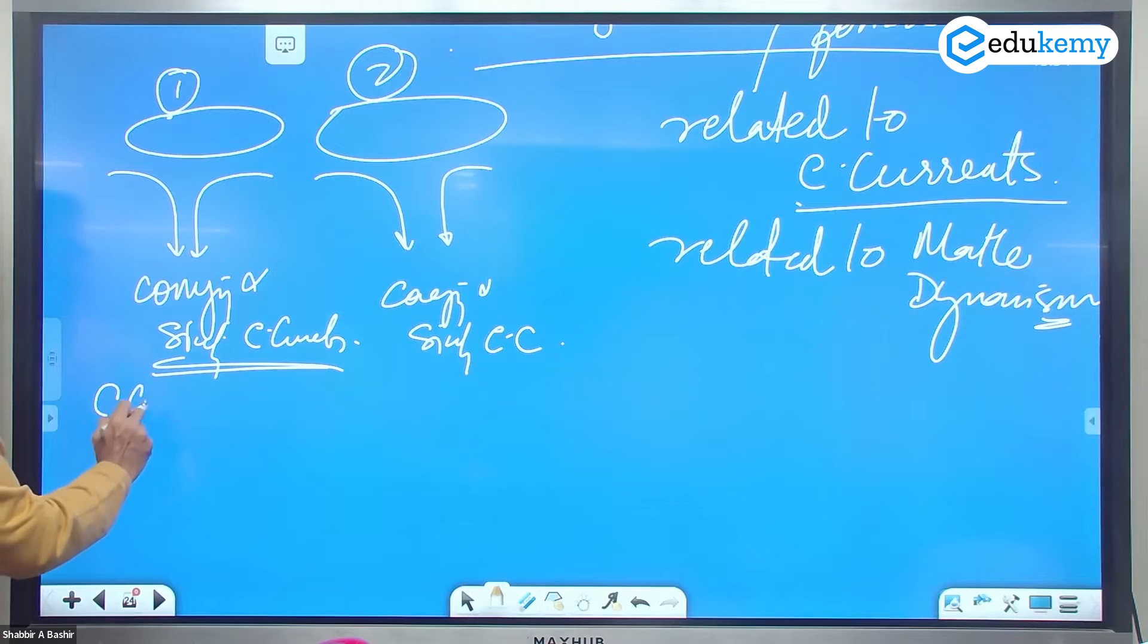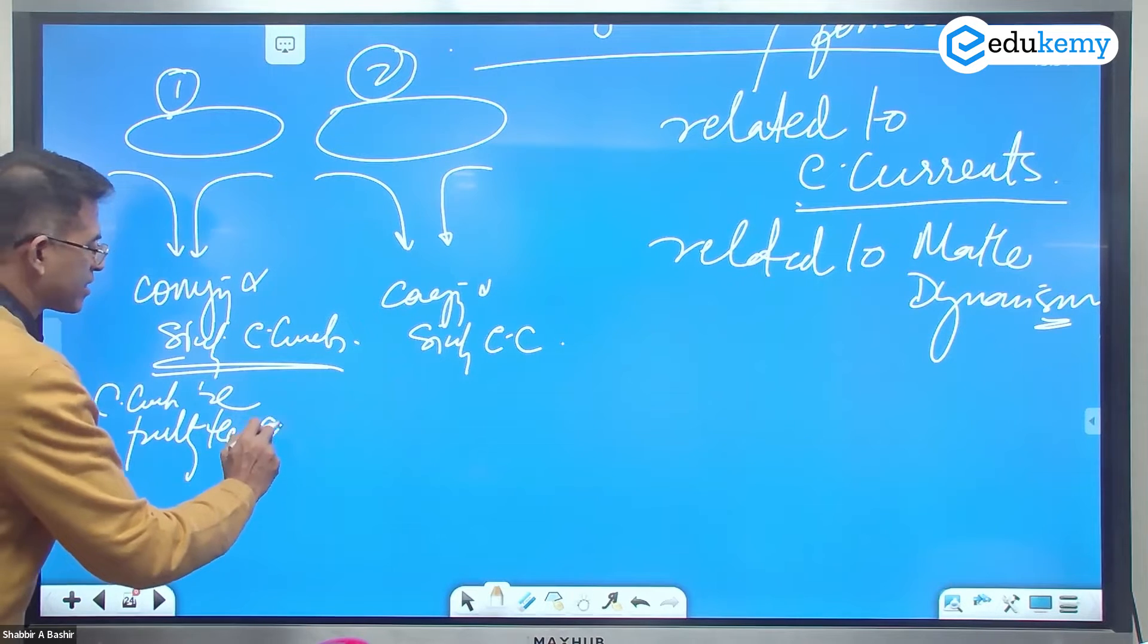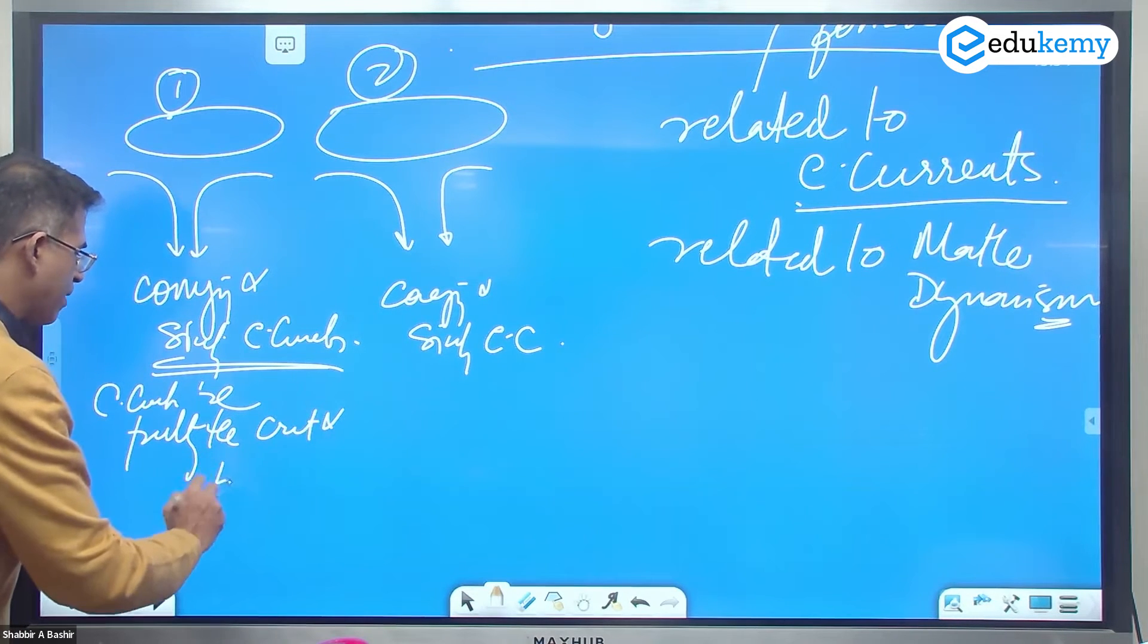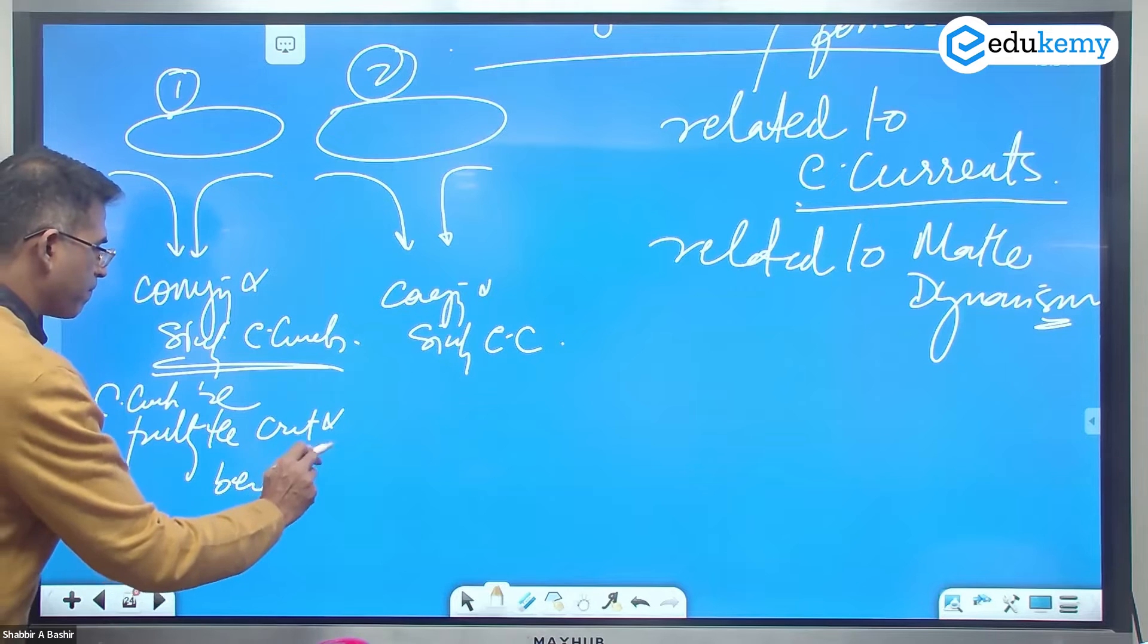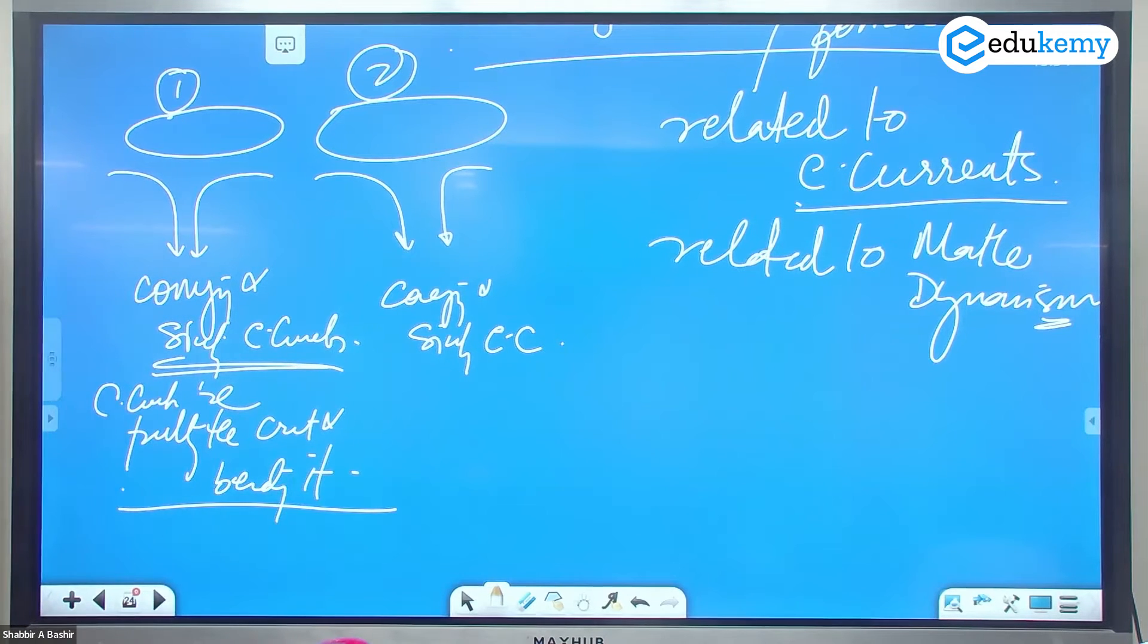Convection currents are pulling the crust and bending it. In the first case, the convection currents are pulling the crust and are bending it.